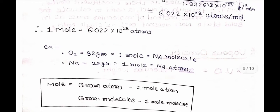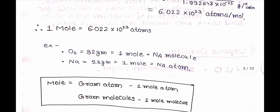Therefore, 1 mole = 6.022 × 10²³ atoms. Example: O₂ = 32g = 1 mole = Nₐ molecules. Another example: Na = 23g = 1 mole = Nₐ atoms. Nₐ is the Avogadro number.